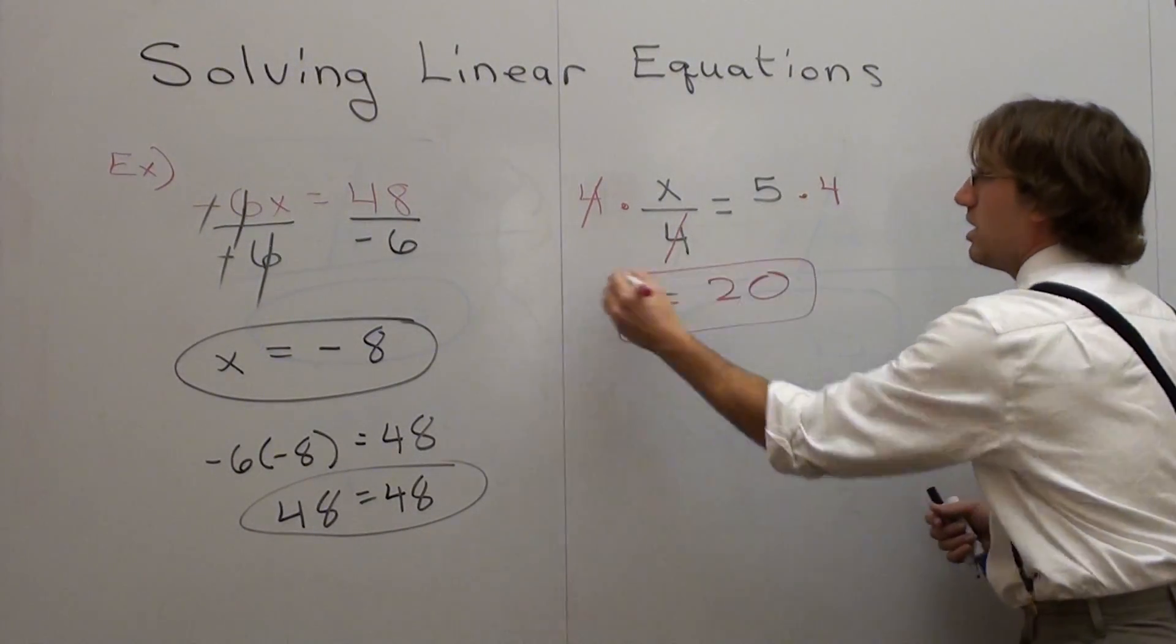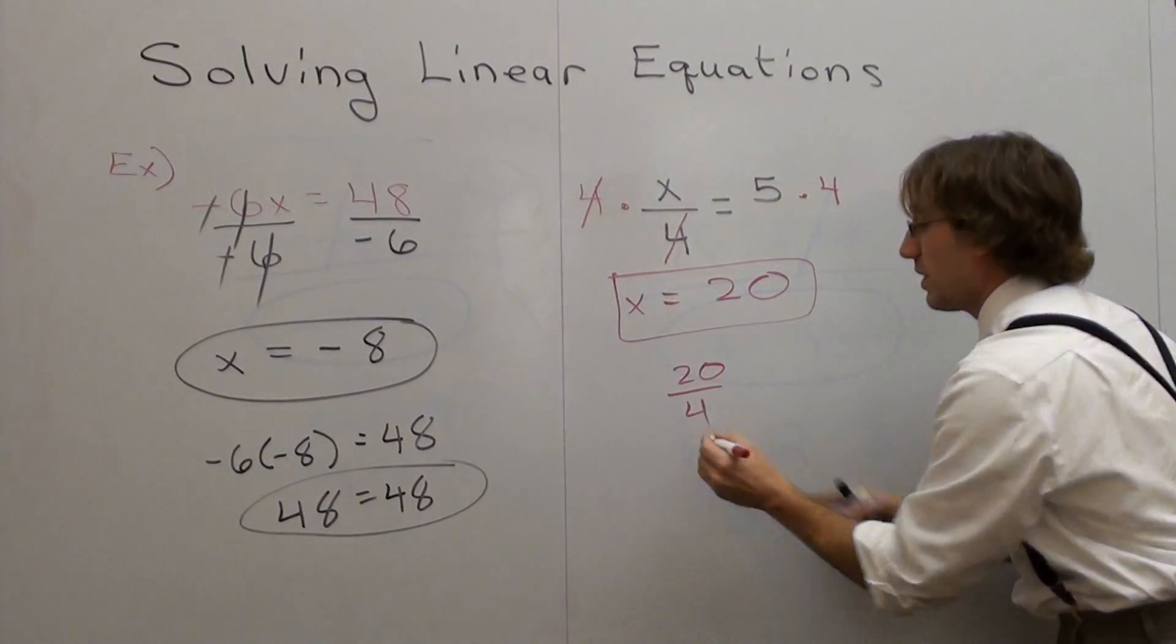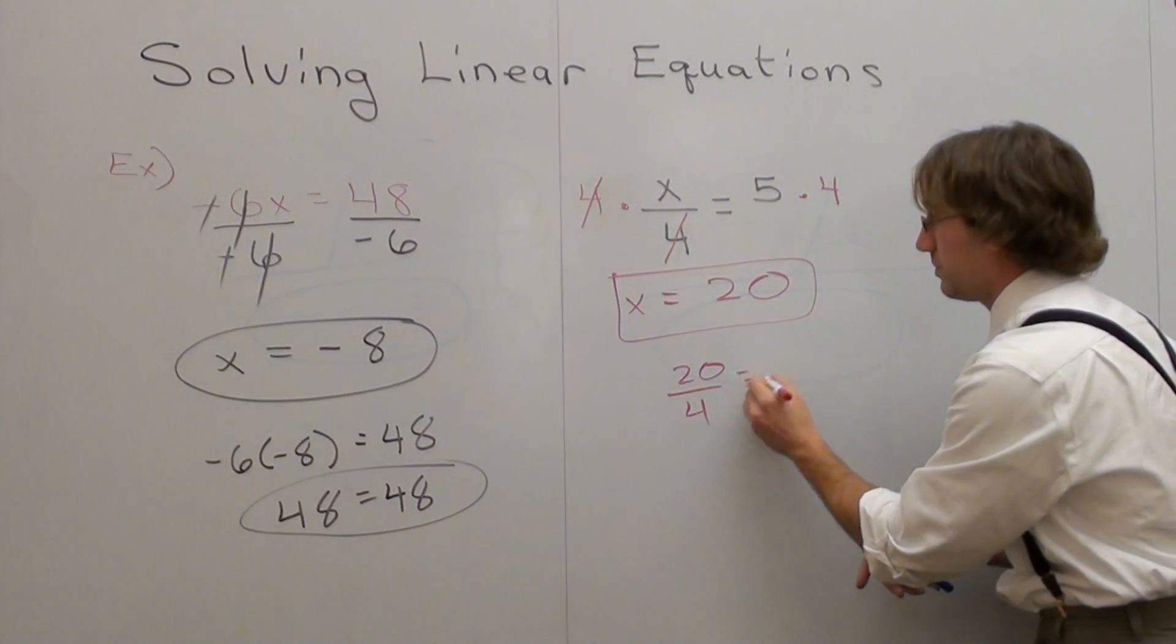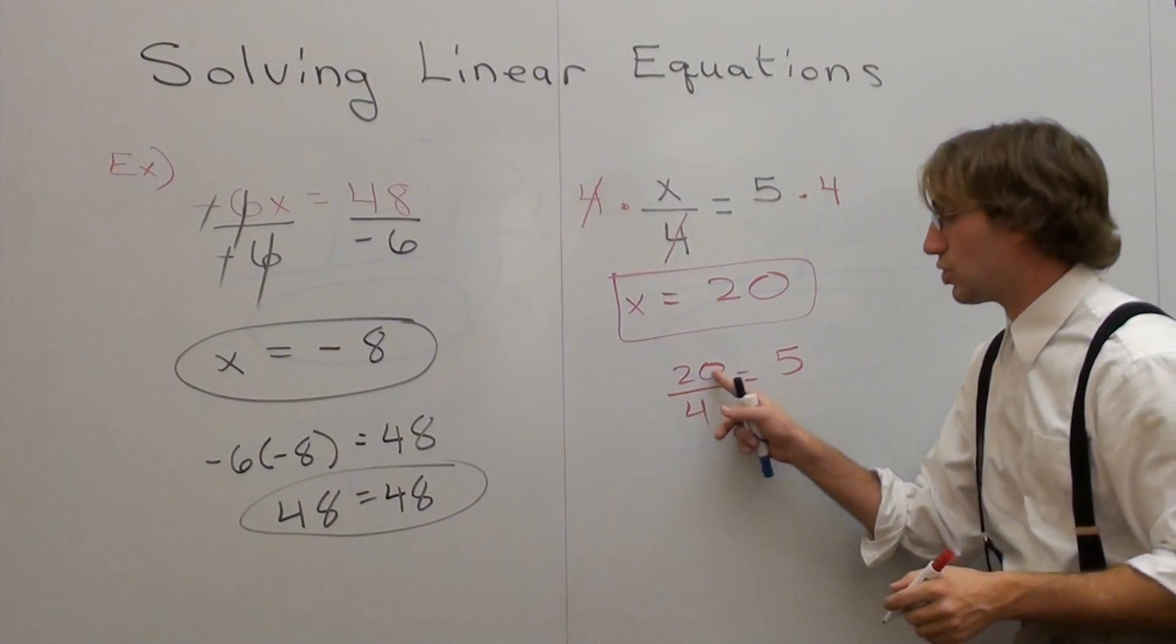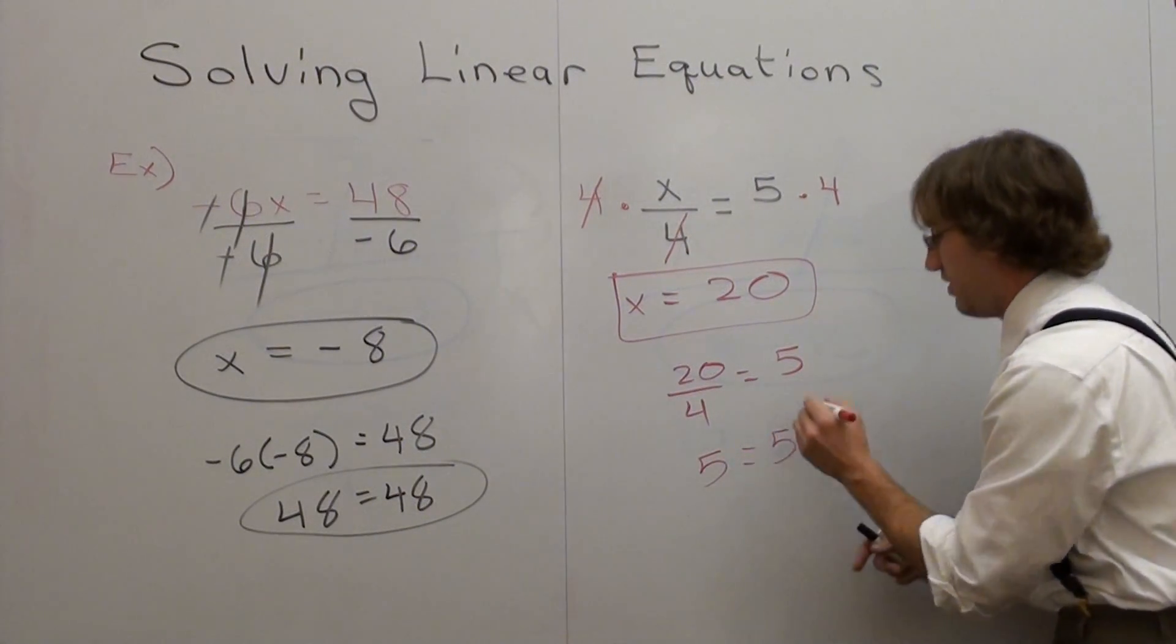4 divided by 4 cancels, and you have x equals 5 times 4 is 20. If you don't believe me, substitute it in. 20 divided by 4 is 5. Is that true? Is 20 divided by 4 equal to 5? Well, yes, this is 5, and 5 equals 5.